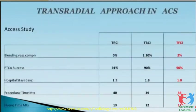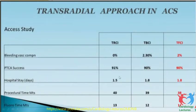This was a landmark study in ACS patients, published in 1996, comparing radial, brachial and femoral. Bleeding vascular complications were 2.3% with brachial and femoral, and zero percent with radial. Success was lower then, but today success is 98 to 99 percent by radial as well as brachial. Hospital stay was 1.5 days with radial compared to longer stay with femoral and brachial.